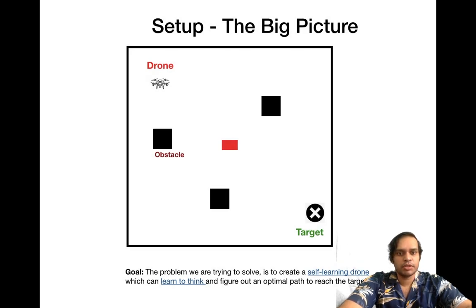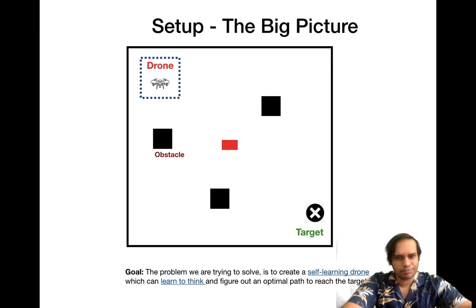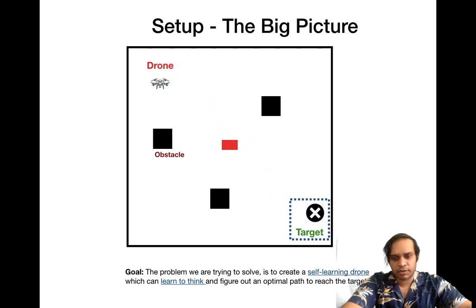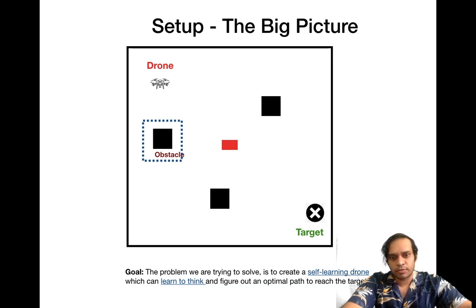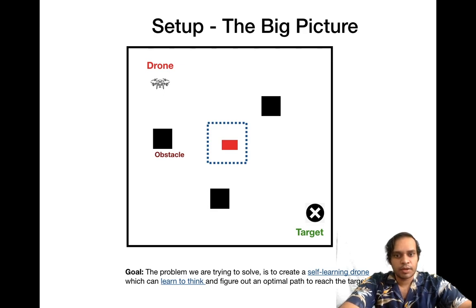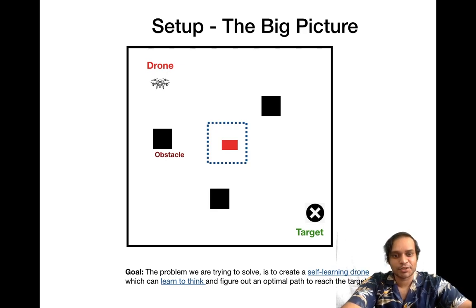We will now have a look at the big picture and see things in context. On the screen we've got the drone on the top left and the target on the bottom right, and a whole bunch of obstacles. We've got those black obstacles and a red obstacle — the red obstacle is a moving obstacle that moves from the left to the right, making the problem a little bit more challenging for the artificial intelligence.